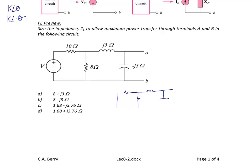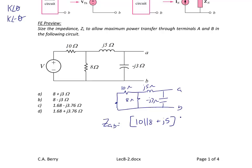The way we turn off a voltage source is to replace it with a short circuit. Once we do that, we have a 10 Ω resistor, a j5 Ω inductor, an 8 Ω resistor, and a −j3 Ω capacitor between terminals A and B. So Z_AB equals 10 in parallel with (8 + j5), and that entire quantity in parallel with −j3, which equals 1.68 − j3.76 Ω.